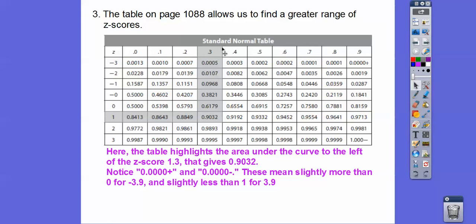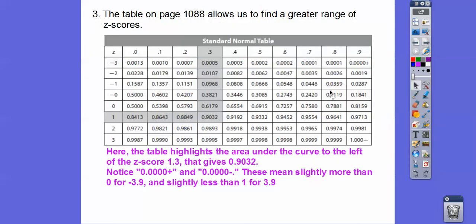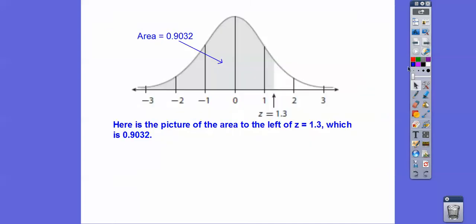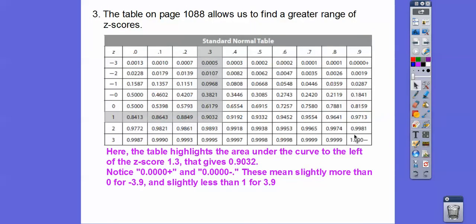At negative 3.9, negative 3.9 is way over here. So it's getting into a very small area, and to the left, the area is always to the left. It gives us a very small area. And then right here, we have 1.000 minus. And so that just means it's a little less than 1. So remember the whole curve is 100% or 1, and so 3.9 is way over here. So the area to the left is pretty much 100% of the curve, which is a little less than 1.